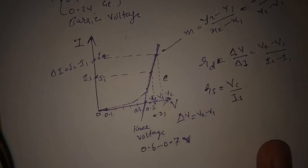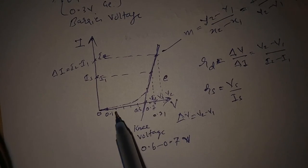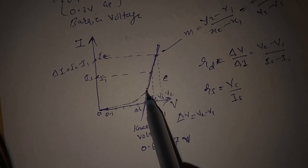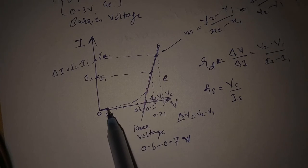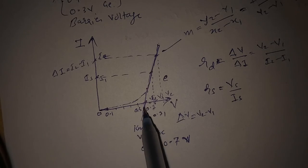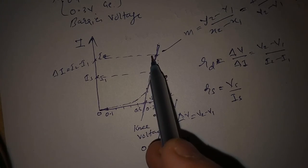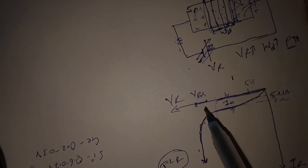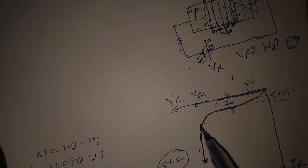In summary: in forward bias, when we reach the knee voltage there is a sudden rise in current due to the barrier potential of around 0.7 volts — once the barrier potential is crossed there is a sudden increase in current. In reverse bias, we get a breakdown voltage, and at that breakdown voltage the junction breaks down causing a large flow of current. That covers the complete VI characteristic of a diode.